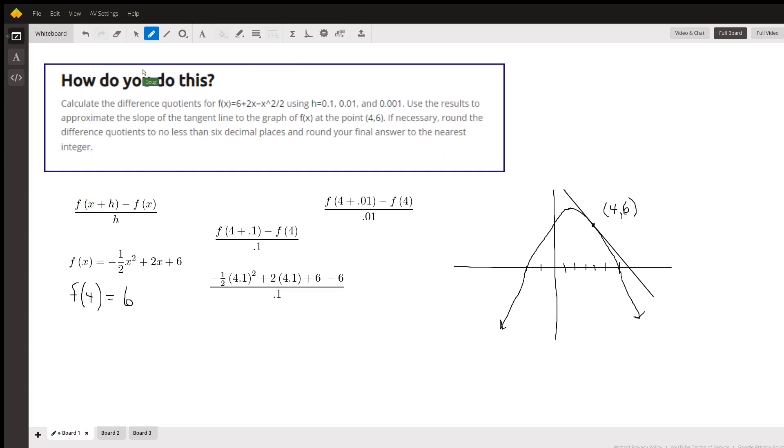Now this thing right here is a difference quotient, and on the next board we're going to see what that means. Here's f(x), and we can confirm that f(4) does indeed equal 6 by putting 4 in for x. We get -1/2(4²) which is -8, plus 8 is 0, plus 6. So f(4) equals 6, so (4, 6) is on the parabola. Here's the steps you'd have to go through to calculate a difference quotient.